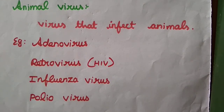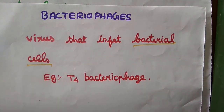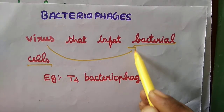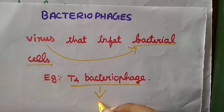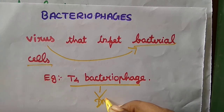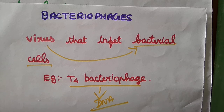The next type is bacteriophage — viruses that infect bacterial cells. Bacteria are single-celled microorganisms, and these viruses affect bacterial cells. An example is the T4 bacteriophage, which we have already studied. That's it for the types of viruses. Students, please write all the information in your observation notes as homework. Thank you — we will see the remaining topics in the next class.